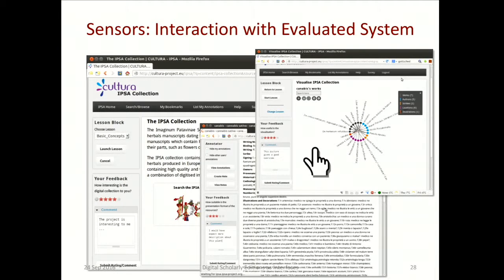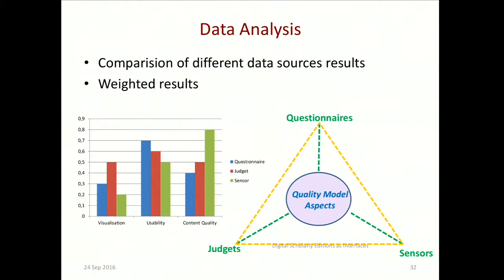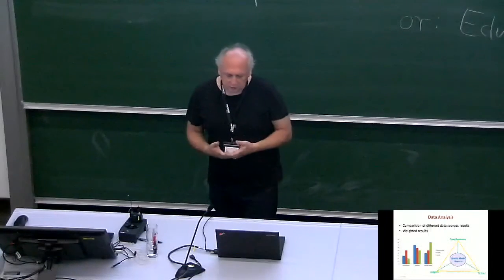We tracked the interaction: every time a user used a functionality of the system, we tracked that usage. At the end, Equalia also provided a questionnaire. The interesting aspect is that we had questionnaires, in-session chat questions during use, and sensors — the interaction log data. We could combine this data and provide a holistic analysis. For example, if someone rated a visualization very highly but almost never used it, that is different from a person who used it very often, so we could provide weights on the ratings.